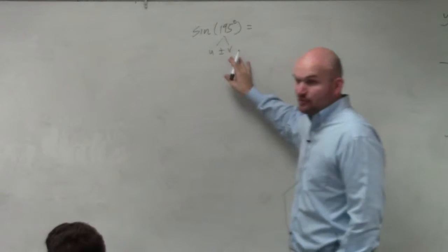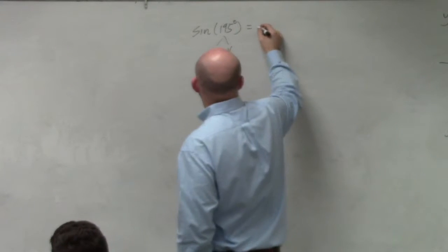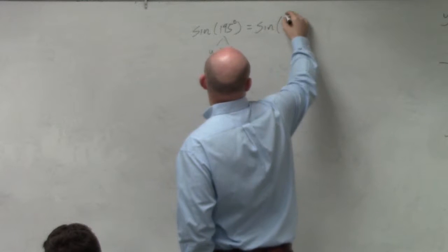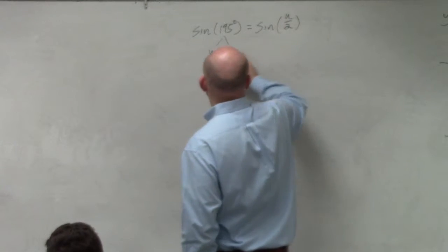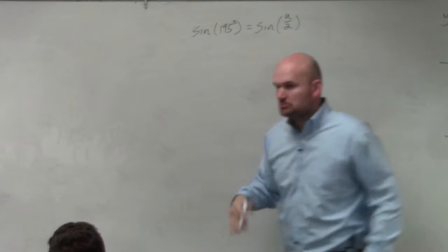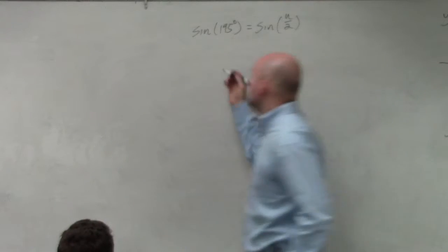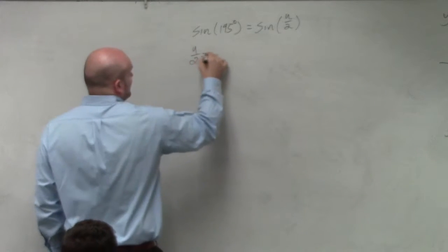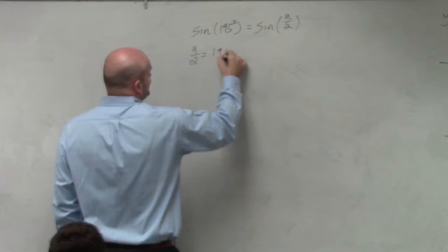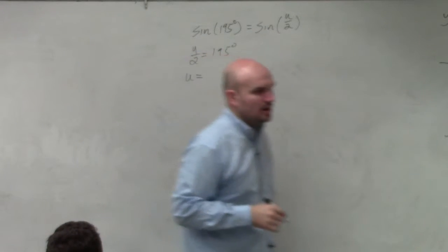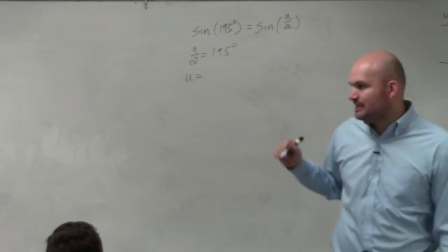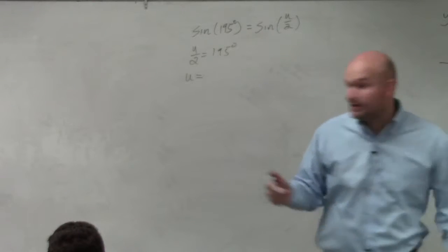If I was going to break this up into half-angle formulas, I could say that sine of 195° is equal to sine of u over 2. Let's just try that. So if u over 2 equals 195 degrees, that means u equals 195 times 2, which ends up equaling 390.